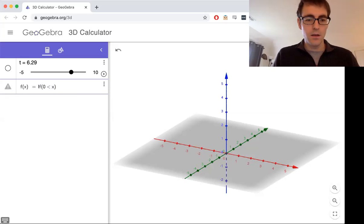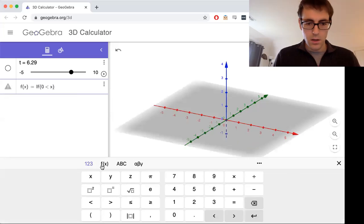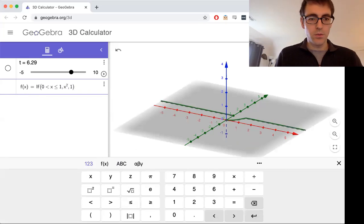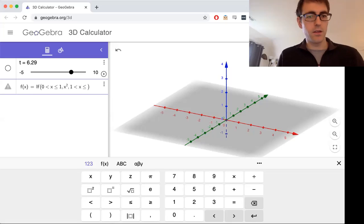Actually, let's use x's between 0 and 1. Let's say that when x is between 0 and 1, our function looks like x squared, and then when x is between 1 and 2, so we're including the upper limits of this, maybe it looks like the function 1.